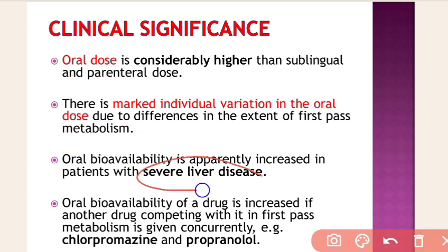In persons with severe liver disease, such as cirrhosis or hepatic dysfunction, oral bioavailability is mostly increased, so care must be taken. Also, oral bioavailability of a drug is increased if another drug competing with first pass metabolism is given concurrently — for example, the antipsychotic chlorpromazine and the beta-blocker propranolol; when given together, the bioavailability of propranolol is increased.